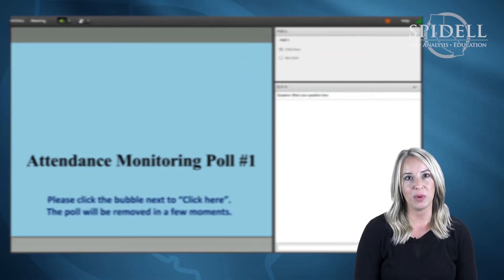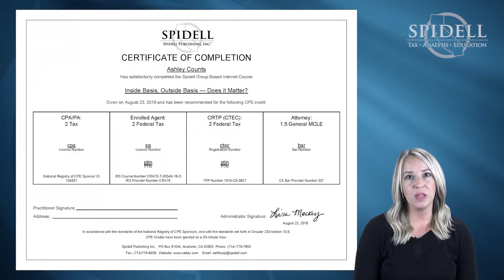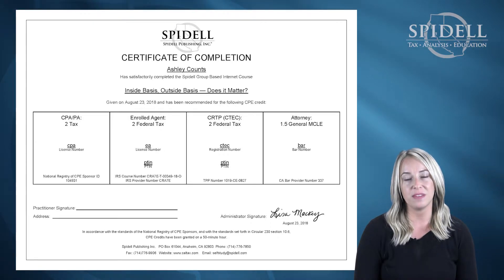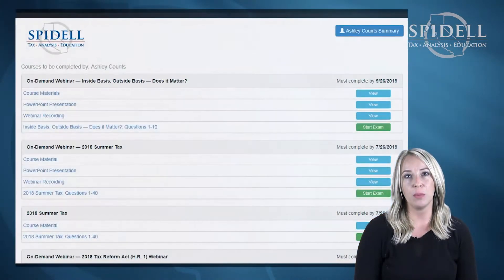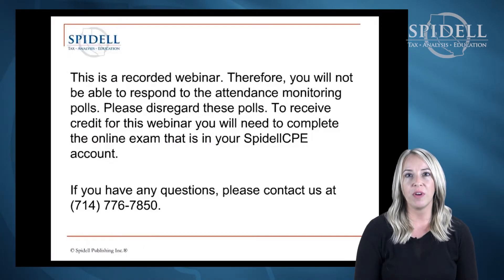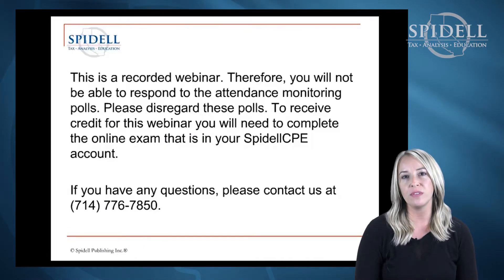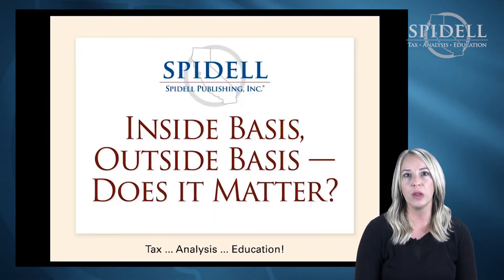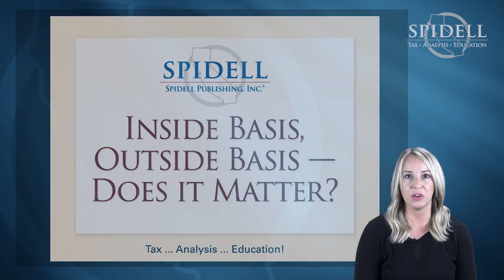After the webinar is finished you will be emailed a certificate of completion within five business days if you have completed the required amount of attendance monitoring polls. If you were not able to answer enough polls or if you just couldn't make it to the webinar that day, we will provide you with access to the on-demand version of the course that will allow you to review the recording of the webinar and take an exam for CPE credit.